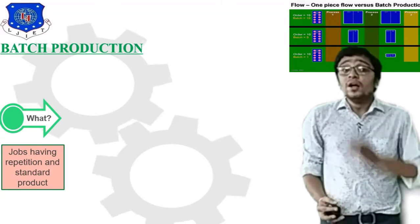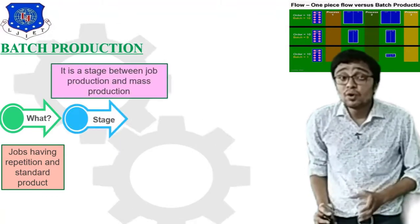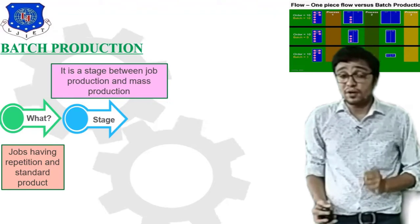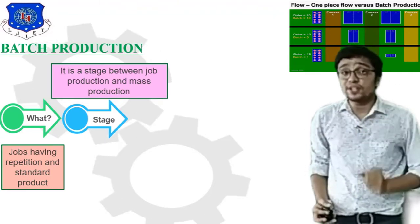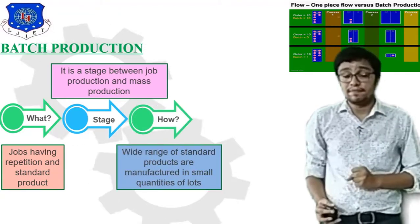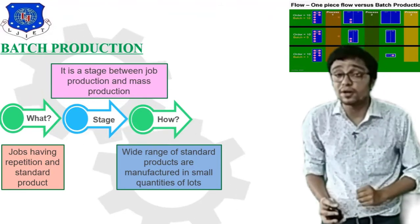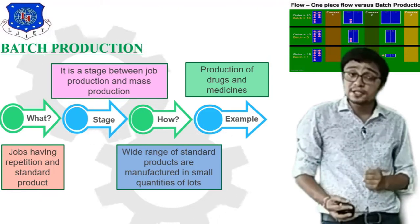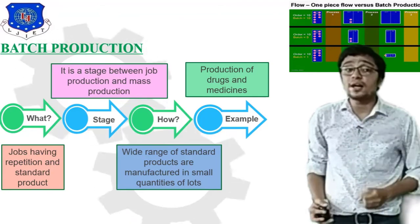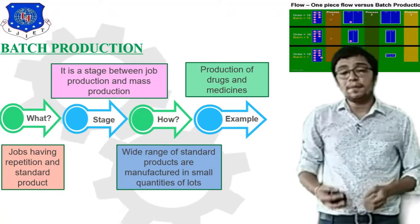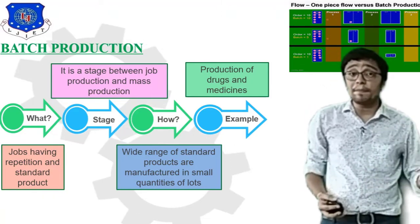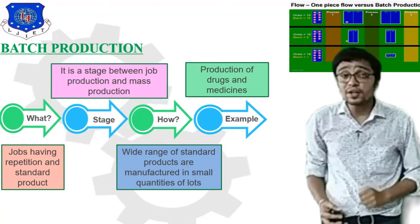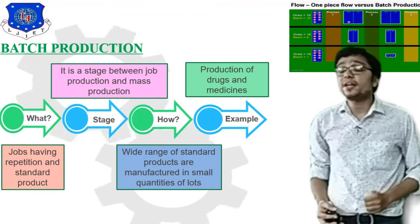Batch type production involves high repetition and standard products. It is a stage between Job type production and Mass type production. A wider range of standard products are manufactured by this type of production system. Examples of Batch production include production of drugs and medicines. In summary, Job type produces only one job; Batch type production varies from 2 to 10 quantities.